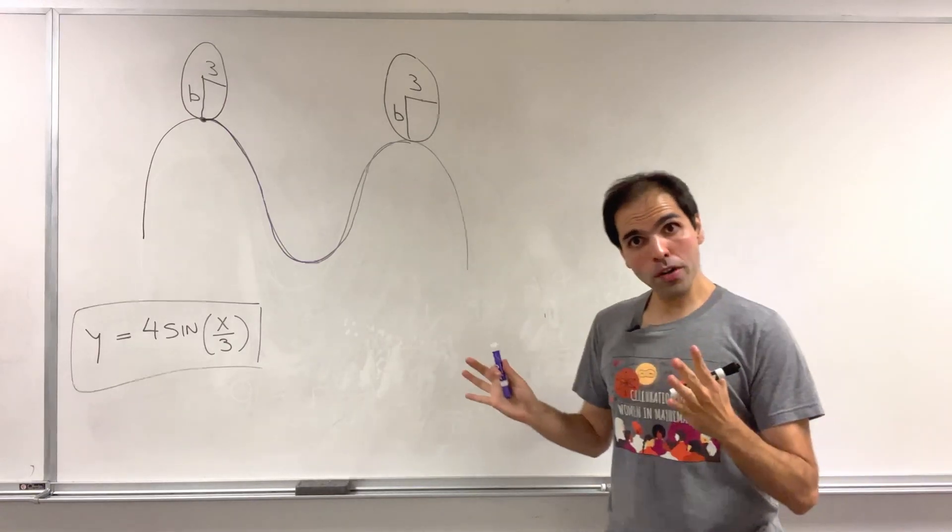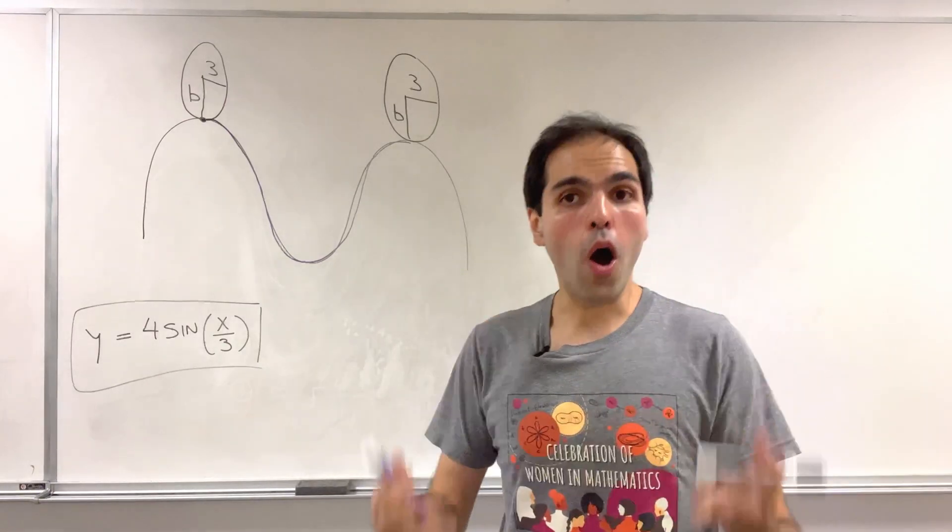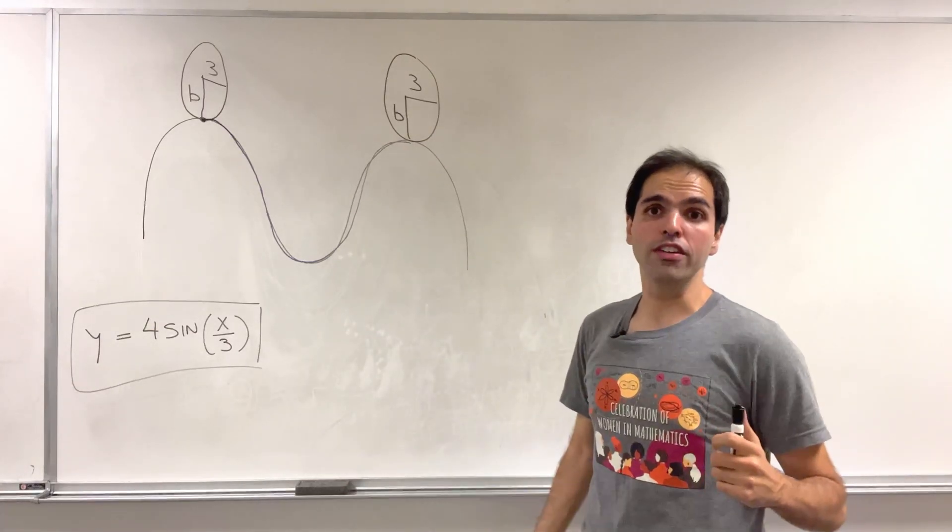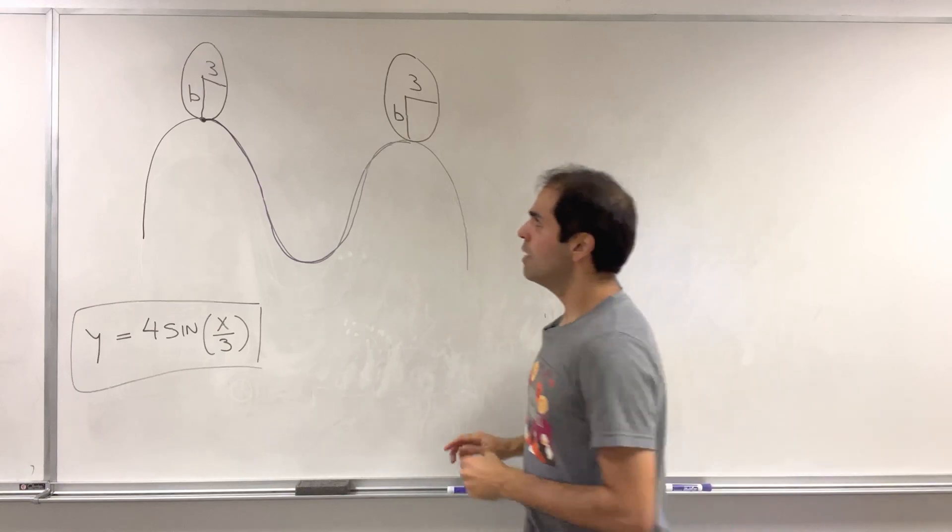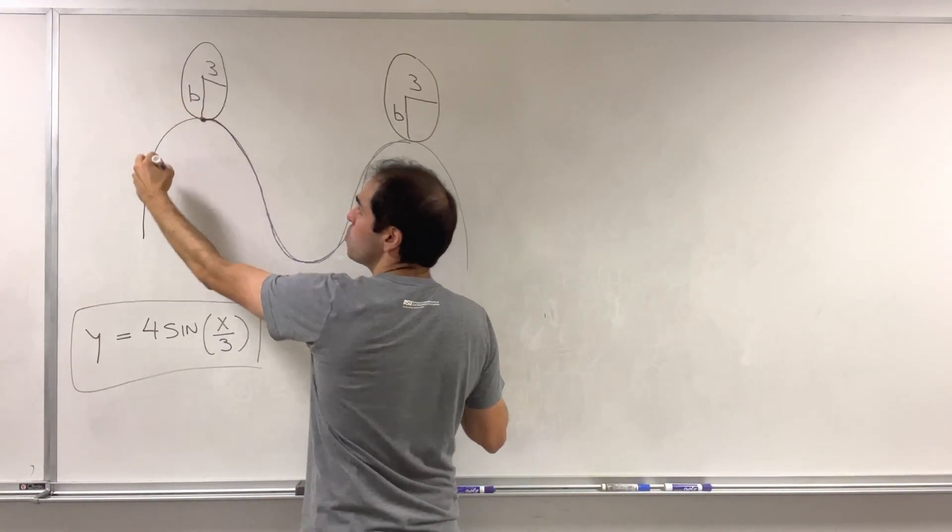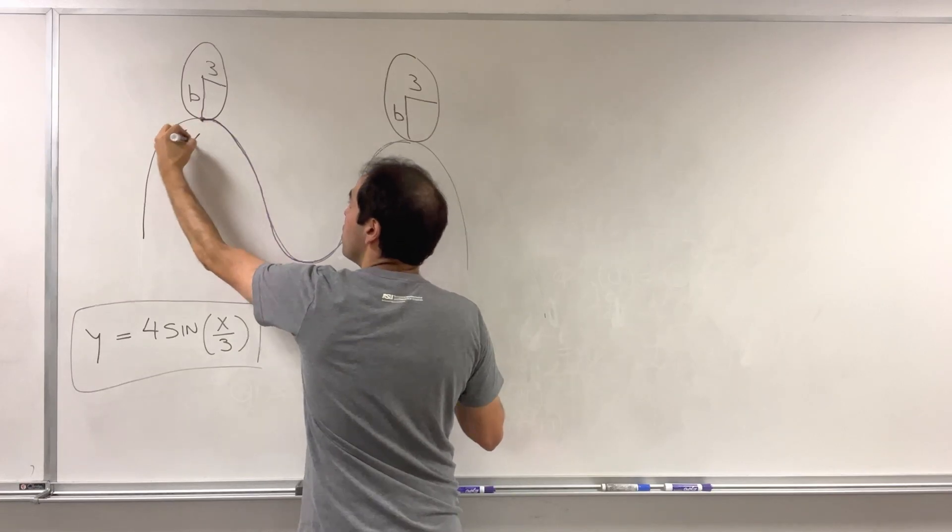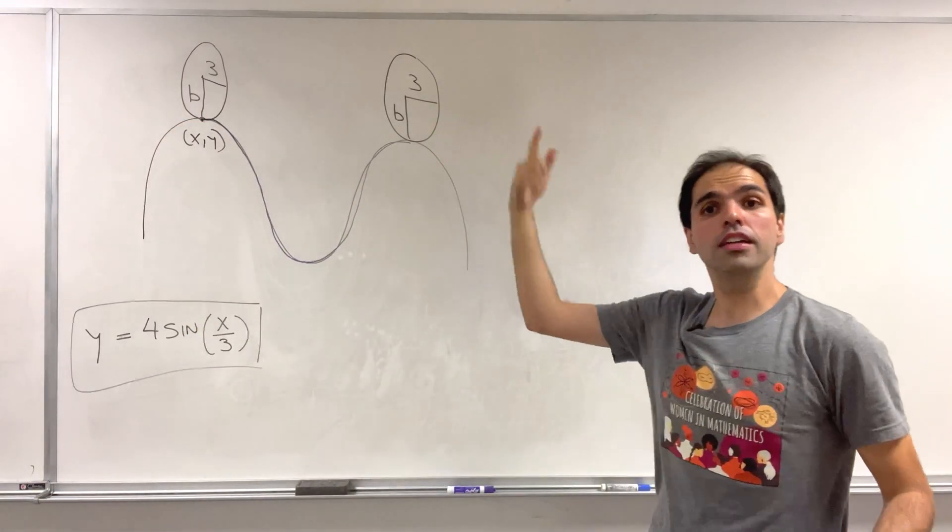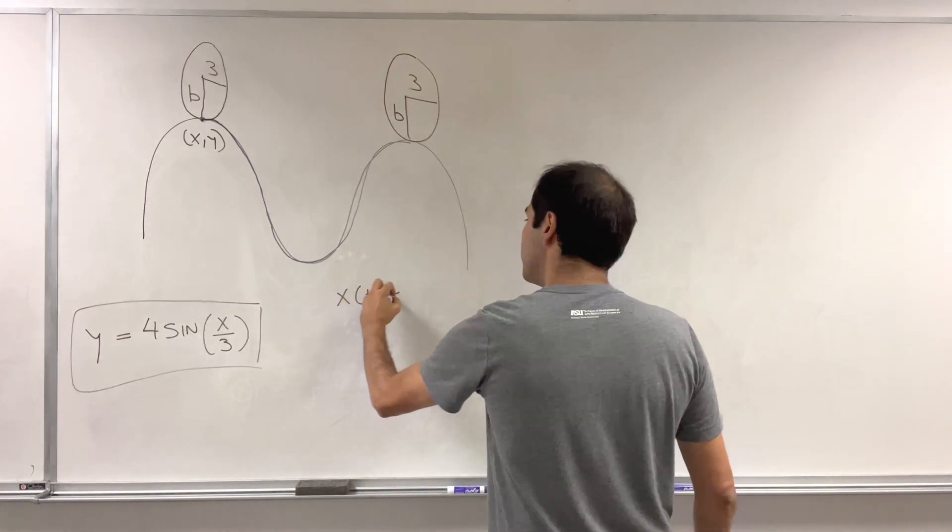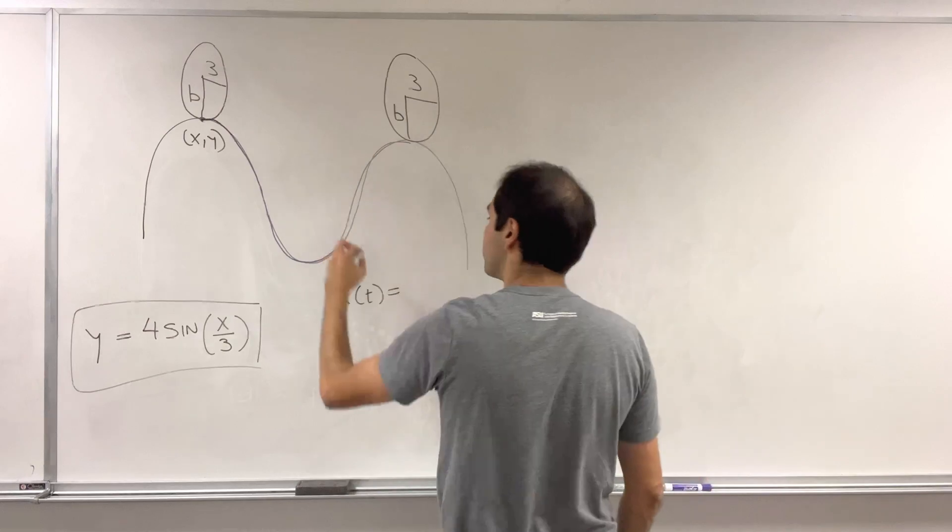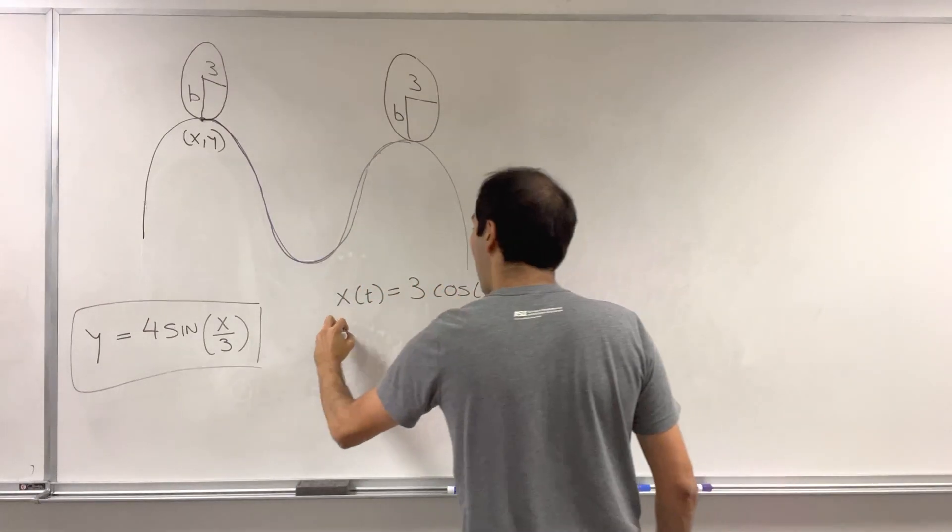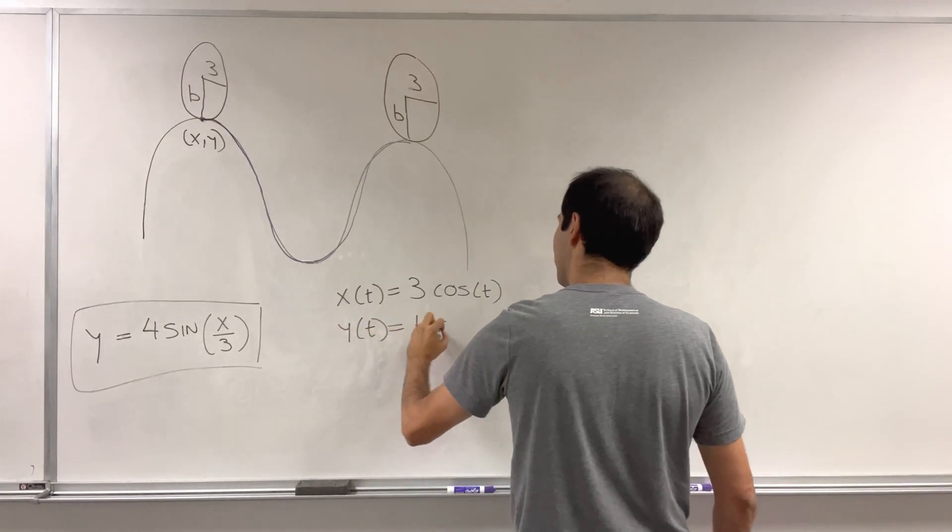And in order to solve this problem all we need to do is calculate that purple length in two different ways. Because on the one hand if you consider this point x comma y, well because it's an ellipse you can parametrize x and y simply by x is 3 cosine t and y is b sine of t.